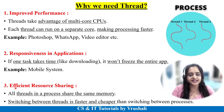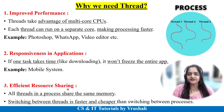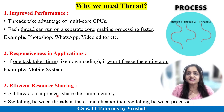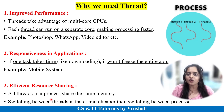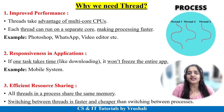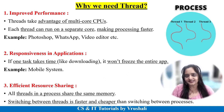The next reason is efficient resource sharing. As we discussed earlier, one process has multiple threads, and all threads share the same memory with the process. That's why switching between all the threads is faster and cheaper. These are the reasons why we have implemented threads in operating systems.